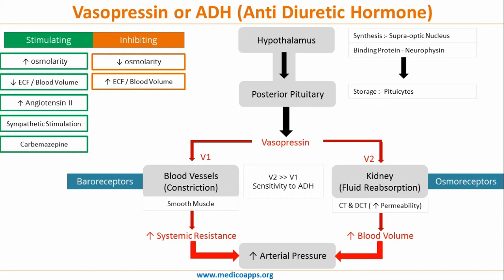Sympathetic stimulation and carbamazepine are other stimulating factors. Alcohol and cold environment, on the other hand, are inhibiting factors for anti-diuretic hormone. That is why when you drink alcohol you will go to the toilet many times. A similar thing happens in a cold environment.